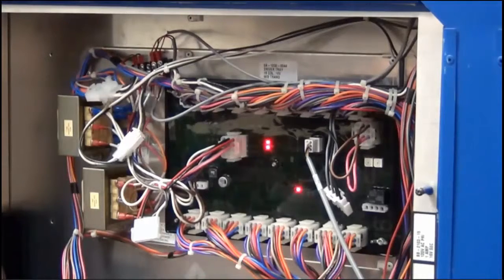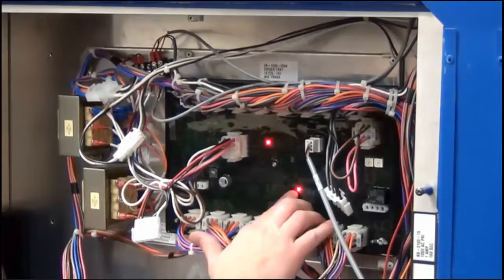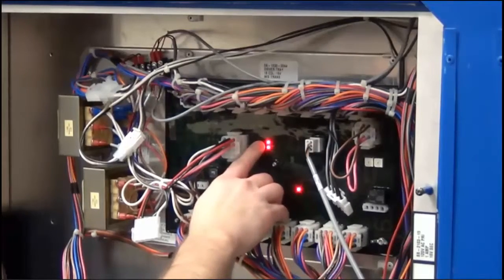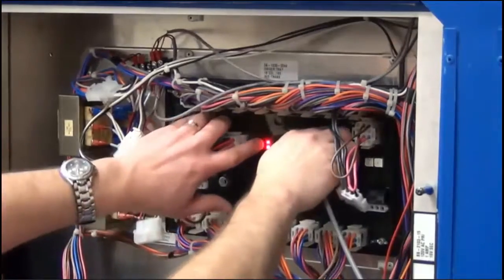On the driver I have some indicator lights. So I have a power indicator light down here. Up here I have a radio signal. So this is telling me that I am getting a radio signal. If I go in and unplug the radio, this light will go out.